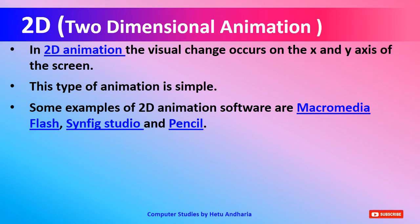In 2D animation, the visual change occurs on only 2 axes — the x-axis and y-axis of the screen. This means you can show only the length and breadth of an object. For example, you cannot display a cube in 2D animation software; you can only display a square. Similarly, you cannot display a spherical shape — only a circle. This type of animation is simple and childish.